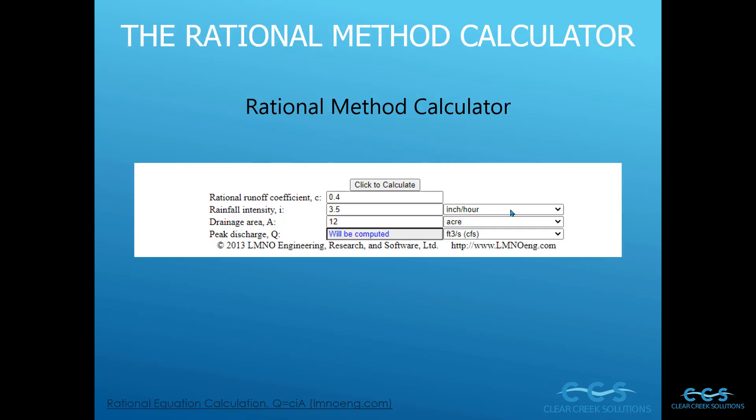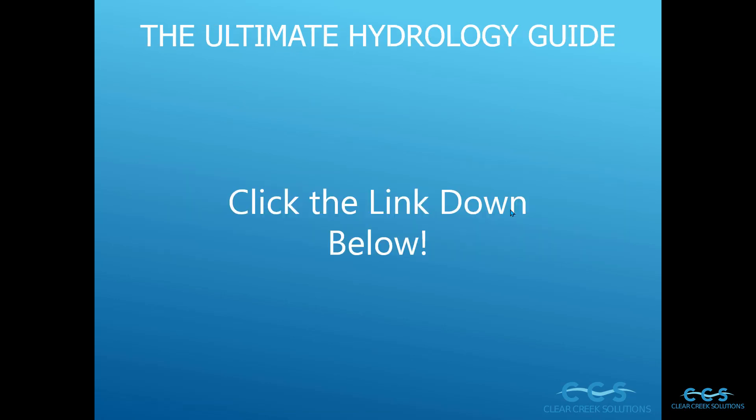There's a rational method calculator — you can see the link in the lower left corner — if you want to learn more about the relationships between these different values and what you will get for peak discharge. If you're confused about different methods like continuous simulation, single event, or the rational method, we have an ultimate hydrology guide for you. Click the link down below to download it and learn about the different kinds of hydrology and their uses. We'll see you in the next video.